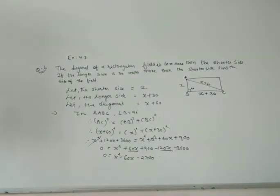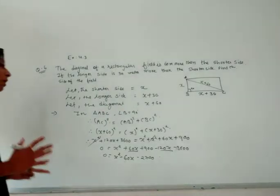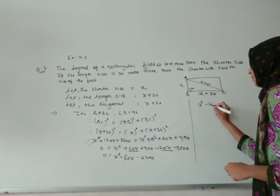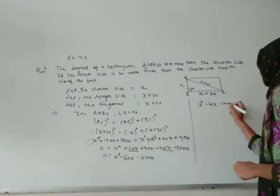Here we have a quadratic equation that we will solve by splitting the middle term or quadratic formula. We can choose x squared minus 60x minus 2700. We can find factors of 2700 that make minus 60.